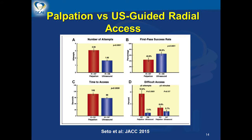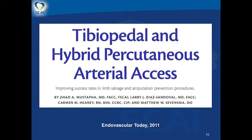In comparative studies of palpation-guided and ultrasound-guided radial access, the number of needle attempts to obtain access was reduced, the first-pass success rate improved, and the time to access decreased using ultrasound guidance. Not only is there increasing evidence for ultrasound guidance for coronary interventions, but use of ultrasound-guided peripheral interventions has also shown improved success rates in limb salvage and amputation prevention procedures.